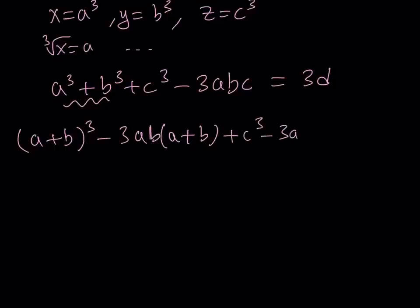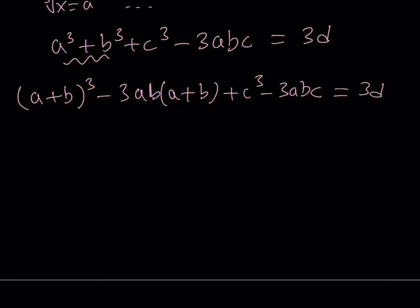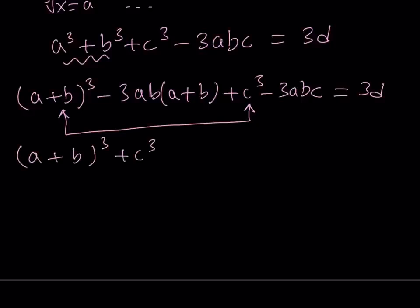Using that identity makes our expression factorable by grouping. I take A plus B, quantity cubed, plus C cubed together, and factor negative 3AB from the remaining terms to get negative 3AB times A plus B plus C. So the expression becomes: A plus B, quantity cubed, plus C cubed, minus 3AB times A plus B plus C, which equals 3D.